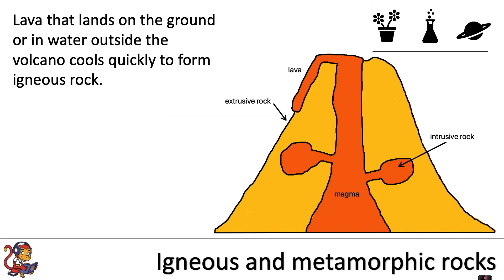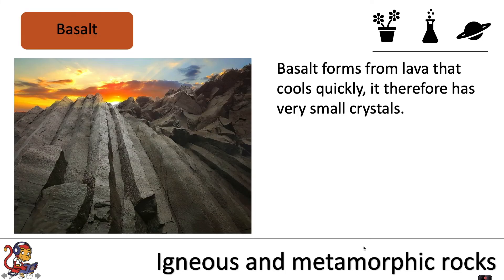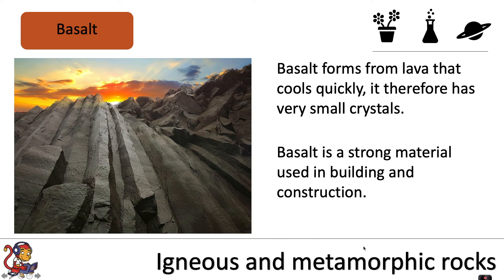Lava that lands on the ground or in water outside the volcano cools quickly to form igneous rock — this is extrusive rock. Because it cools quickly, there is not a long time for crystals to form, so the crystals are very small. Basalt forms from lava that cools quickly and therefore has very small crystals. Basalt is a strong material used in building and construction.